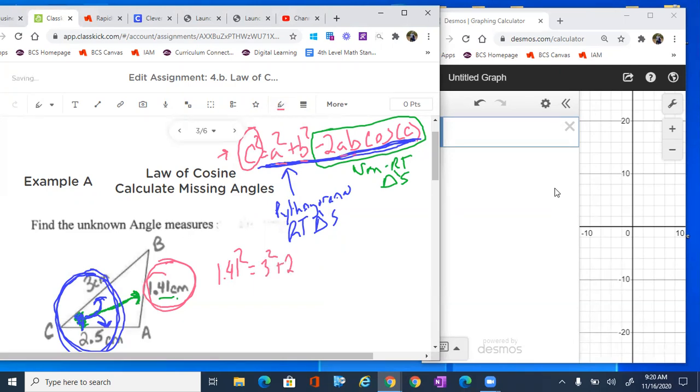So 3 squared plus 2.5 squared minus 2 times, and then I just do it again, 3 times 2.5. And then I'm gonna put cosine of C.